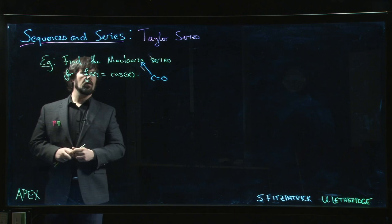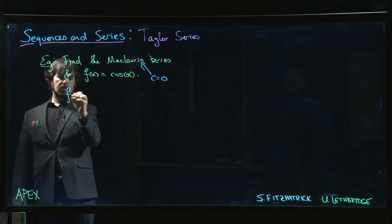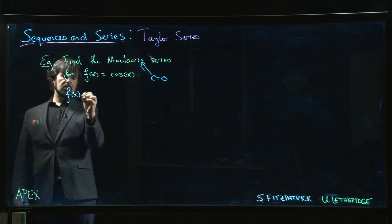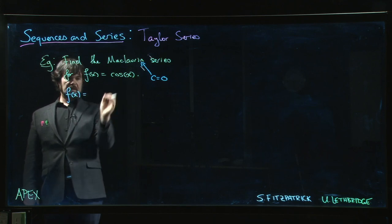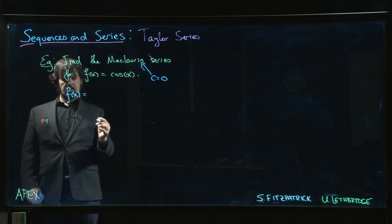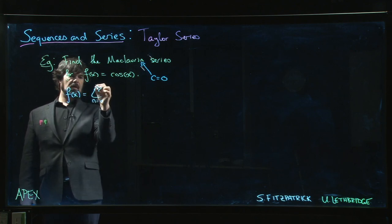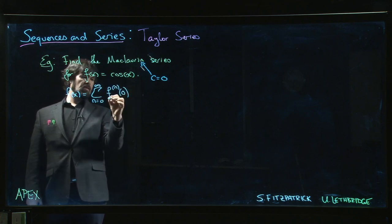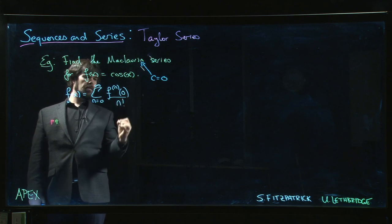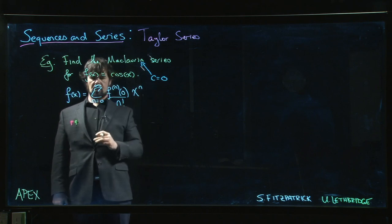All right, so what does the Maclaurin series look like? Well, essentially, and maybe I shouldn't write this as f of x because we haven't quite established that the Maclaurin series will be equal to the function. So we know it's going to look like this: n going from 0 to infinity, nth derivative of f at 0, divide by n factorial times x to the n, right?